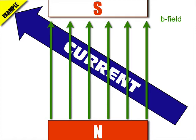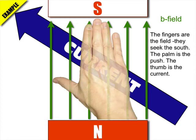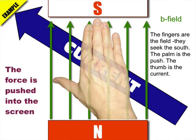So I take my right hand, and I try to orient it to match up these two conditions, the current and the field. And so my right hand will look something like this, with the fingers being the field seeking the south, and my thumb going in the general direction of the current. That means that my palm is the push, and it's pushing the current, whatever's carrying that current, into the screen.